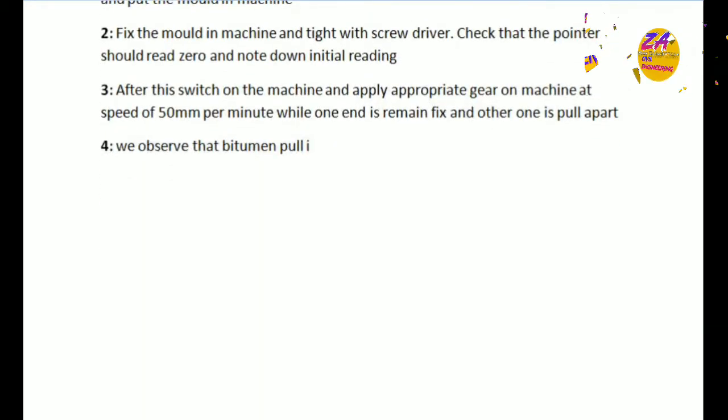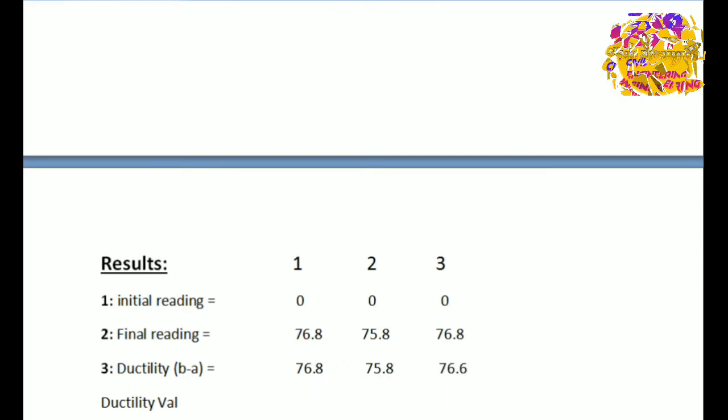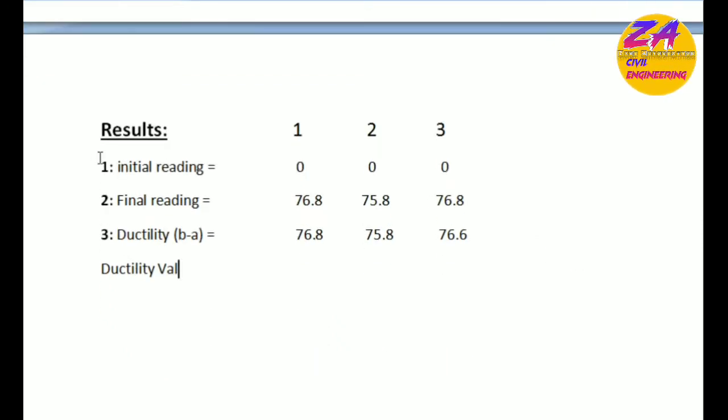Note down the distance at which the bitumen specimen breaks. Note down these three sample values. The results shown on screen: initial reading 0, 0, 0. Final reading 76.8, 75.8, and 76.8. Ductility, the second reading, B minus A equals 76.8, 75.8, and 76.6. The ductility value is 76.4 for grade S-65.